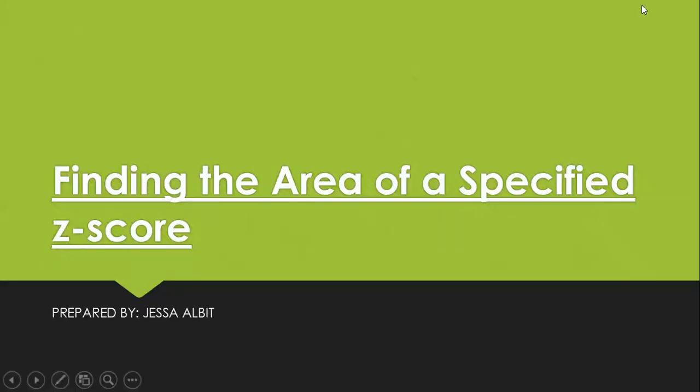Hi! So for today's video, we will be finding the area of a specified Z-score. We have a given Z-score, and we are just going to look for the area of the given Z-score. To identify the area of the specified Z-score, we will be using a Z-table. You can use any Z-table as long as you understand that the table may differ from others.